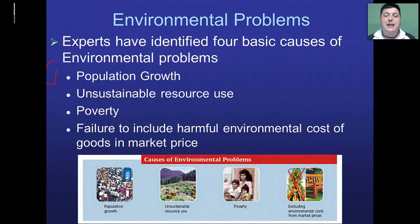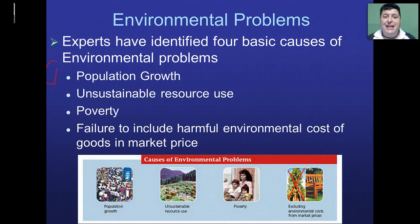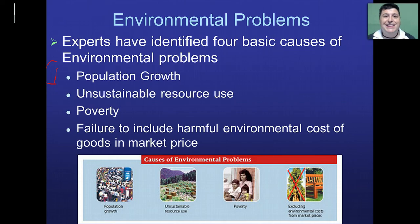Number three is poverty. When nations have a low gross national product and individuals don't have much money to spend, it's hard for a person to consider using resources efficiently or paying for proper waste disposal when they're struggling to put food on their table.